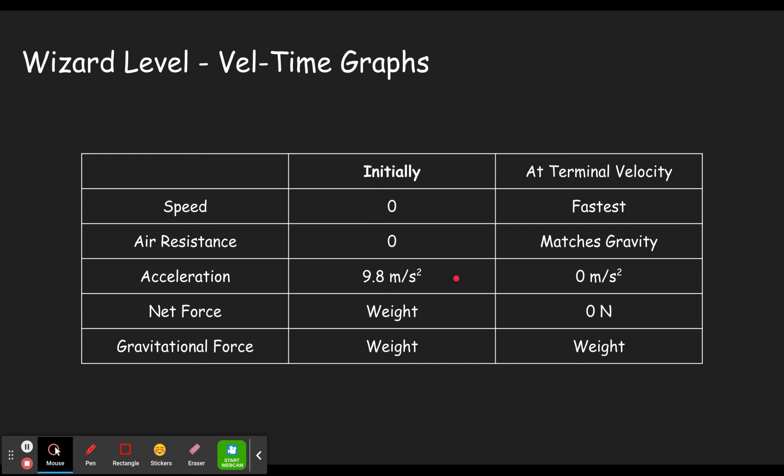Because the upward force of the air resistance matches the downward force of gravity. The net force at the beginning of course was the weight. Because at the beginning, there was only one force, which was the force of gravity, which is the weight.